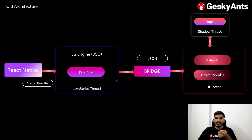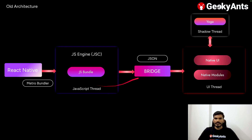In React Native's stylesheet, we use Flexbox to lay out components, but the native UI doesn't understand Flexbox. The Yoga library converts Flexbox layouts into the particular native UI format for iOS or Android. The main issue is the bridge: all communication from the JavaScript side to the native side must go through it, requiring serialization and deserialization every time.